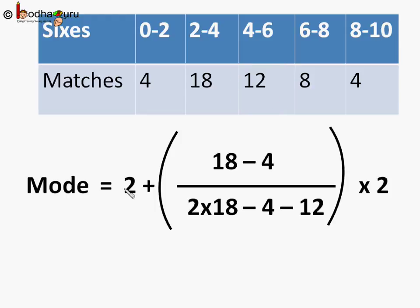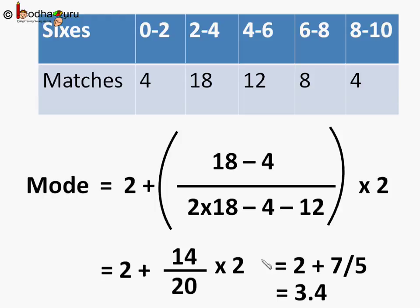So, we put in the values: 2 plus 18 minus 4 by 2 into 18 minus 4 minus 12 whole bracket into 2. Which is, we solve the inside bracket part, we get 14 by 20. So, it becomes 2 plus 14 by 20 into 2, which is equal to 2 plus 7 by 5, which is equal to 2 plus 1.4, which is equal to 3.4.